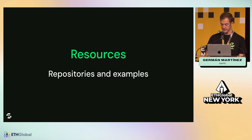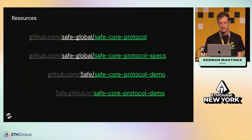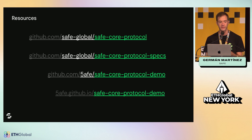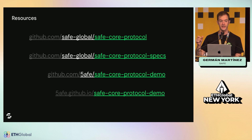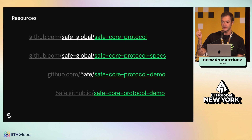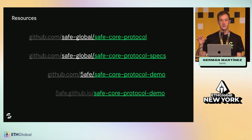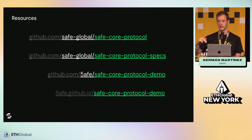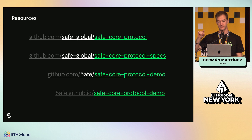Here are some resources for the Safe Core Protocol. We have two organizations on GitHub: the Safe Core Protocol organization and 5.8, where you will find more experimental things. In the first repository, you can find all the interfaces and contracts we have implemented, like the registry and the manager. In the second one, there are specs, diagrams, and flows that are useful to understand how it works. You can also find a demo — a React application that can be used inside our web app — where you can see a registry with multiple plugins, enable and disable them, and link URLs to these plugins so you can open their interface and operate with them.